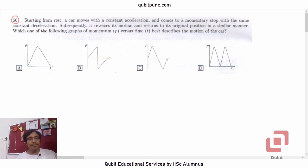The problem is from mechanics, which states: starting from rest, a car moves with a constant acceleration and comes to a momentary stop with the same constant deceleration. Subsequently, it reverses its motion and returns to its original position in a similar manner. Which one of the following graphs of momentum P versus time T best describes the motion of the car?